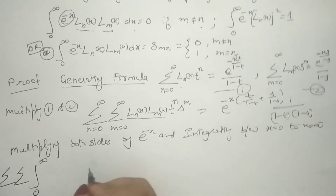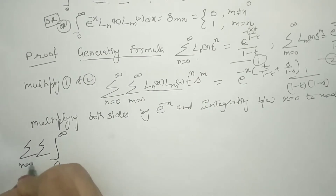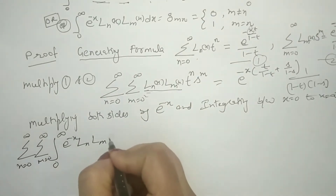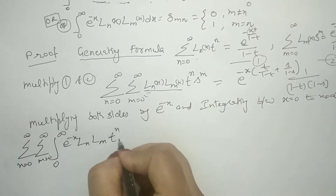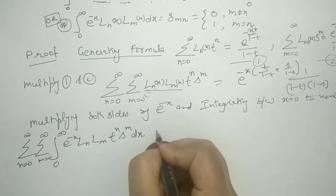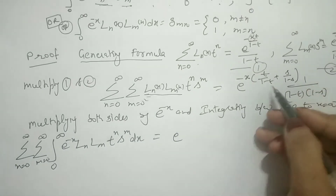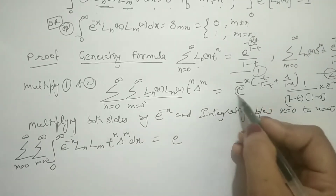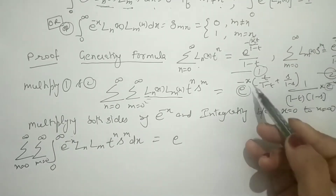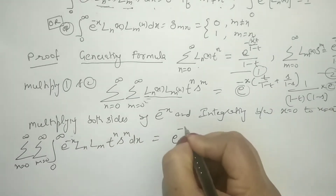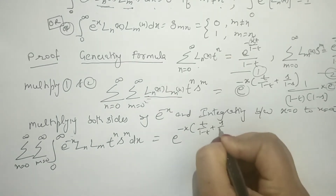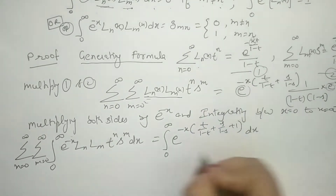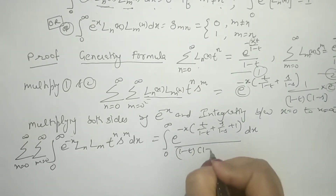On the left side, the double summation remains with m from 0 to infinity, and e^(-x) is multiplied in. Ln and Lm remain as they are, and we integrate with respect to x. On the right side, multiplying by e^(-x) again adds the powers, so the exponent becomes -x · [t/(1-t) + s/(1-s) + 1]. The denominator (1-t)(1-s) remains unchanged.